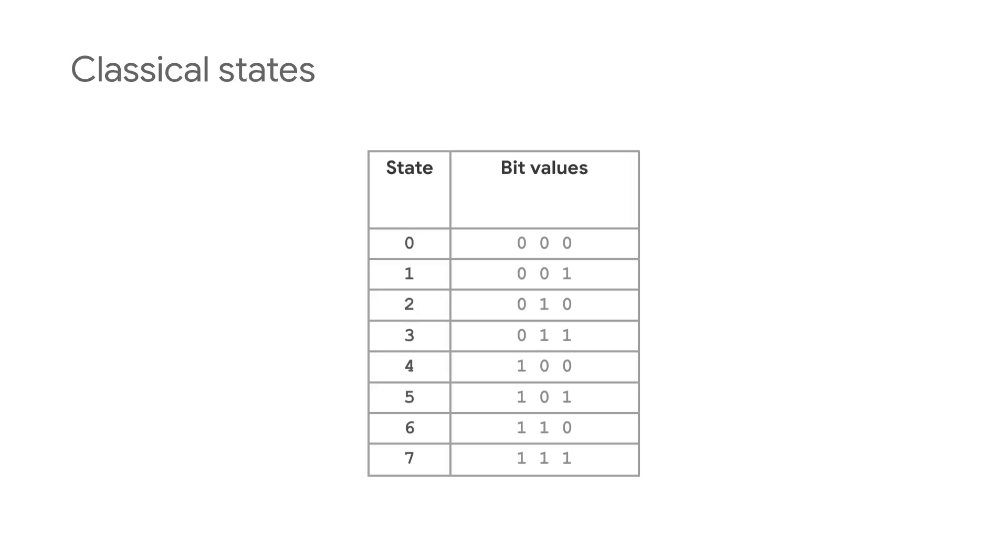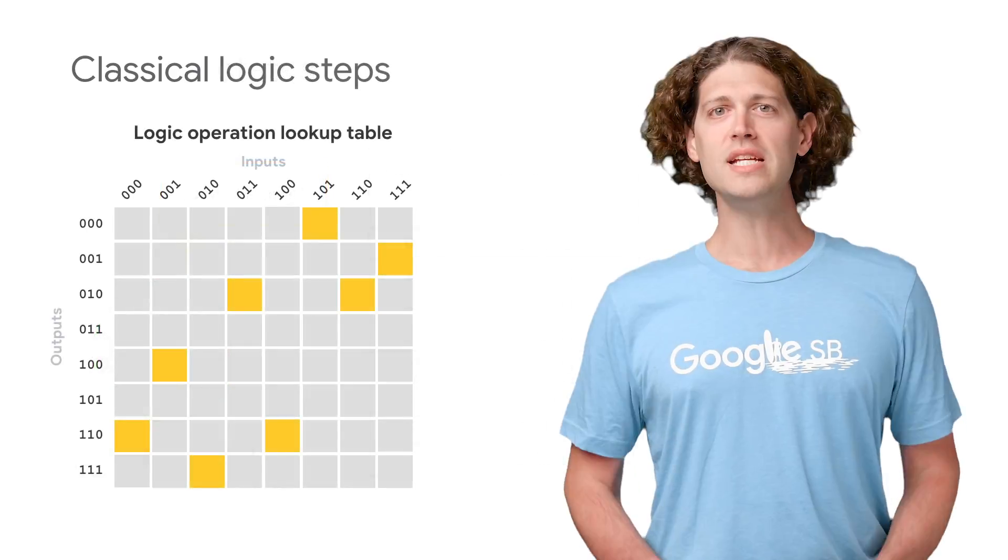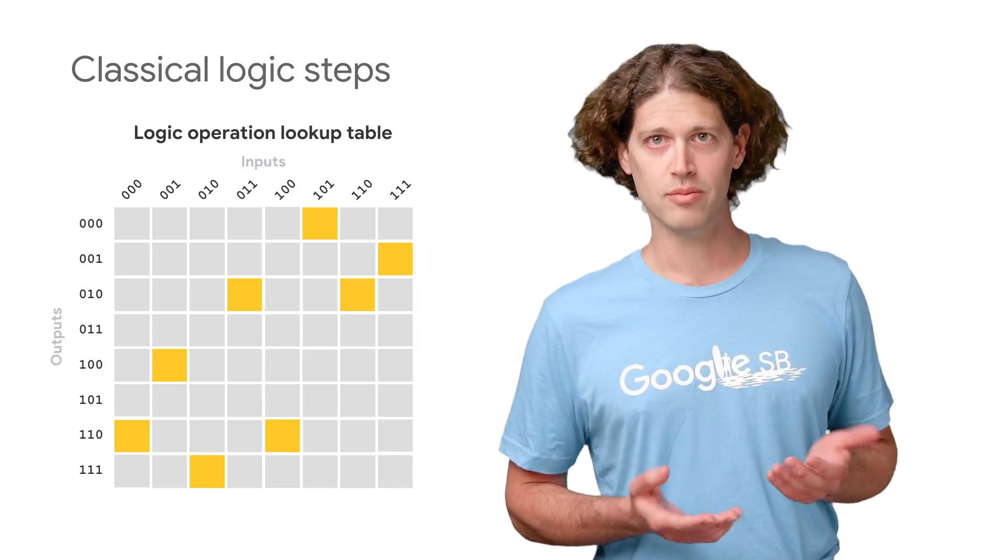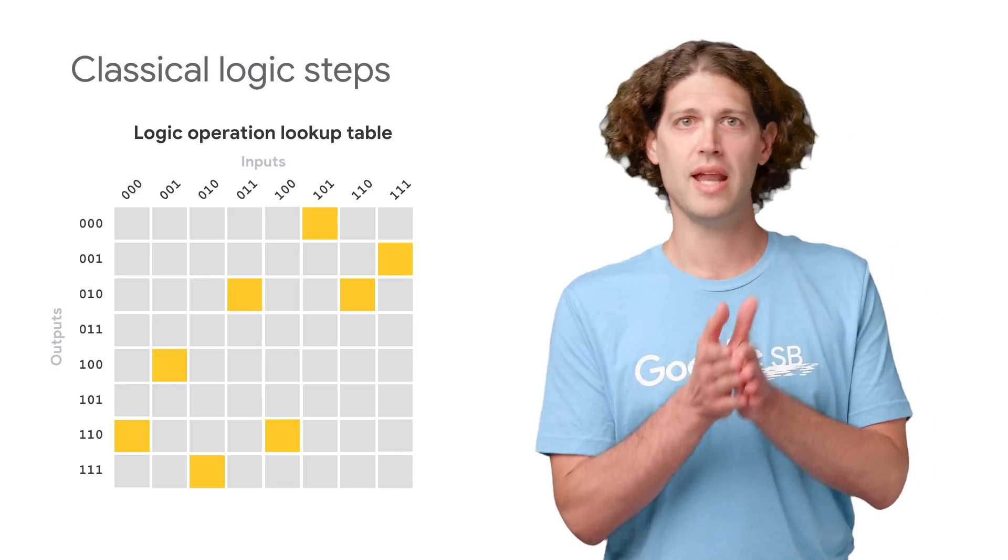Think of the state of computer memory as a string of bits. For n bits, there are two to the n possible strings. But because we're based in classical physics, the state of the computer is just one of these states at each point in time. On each step of a classical algorithm, we go from one state to the next.